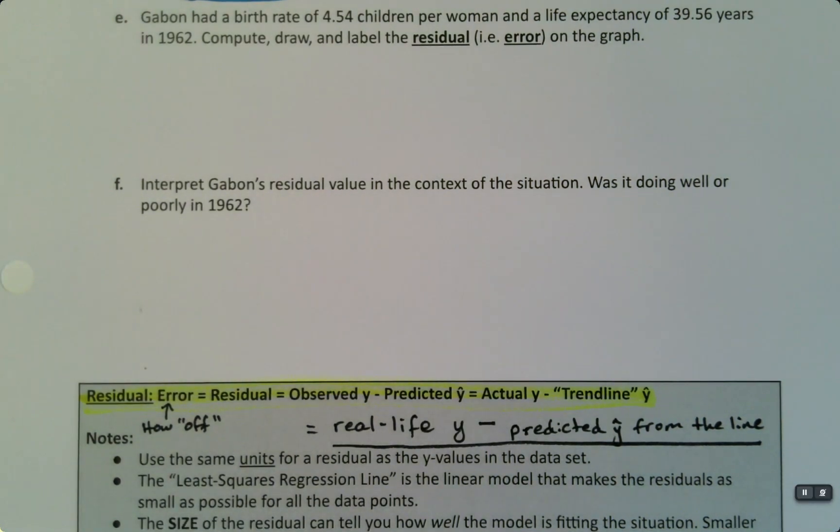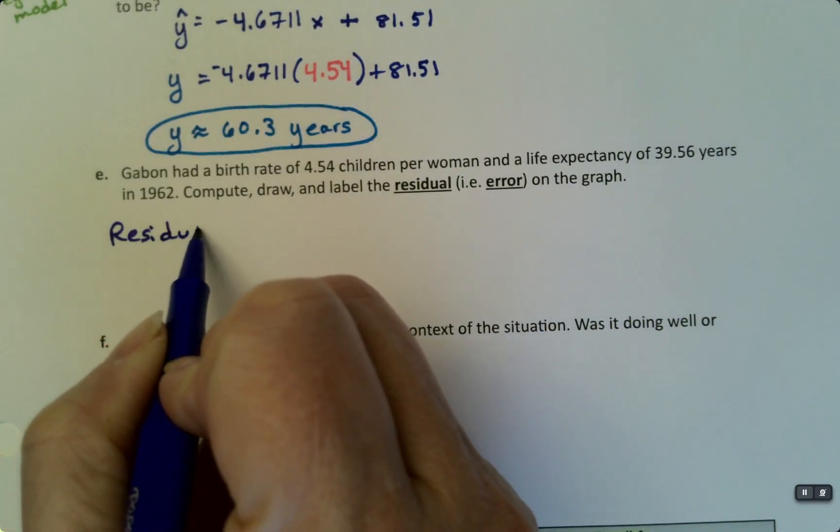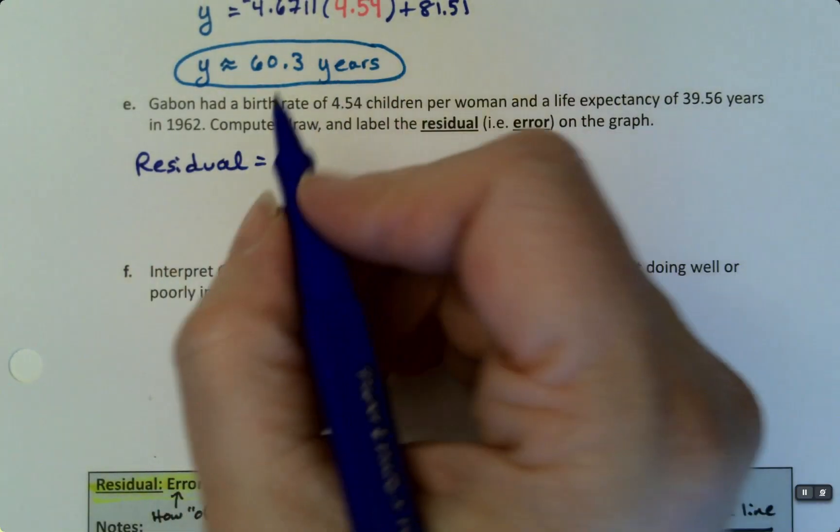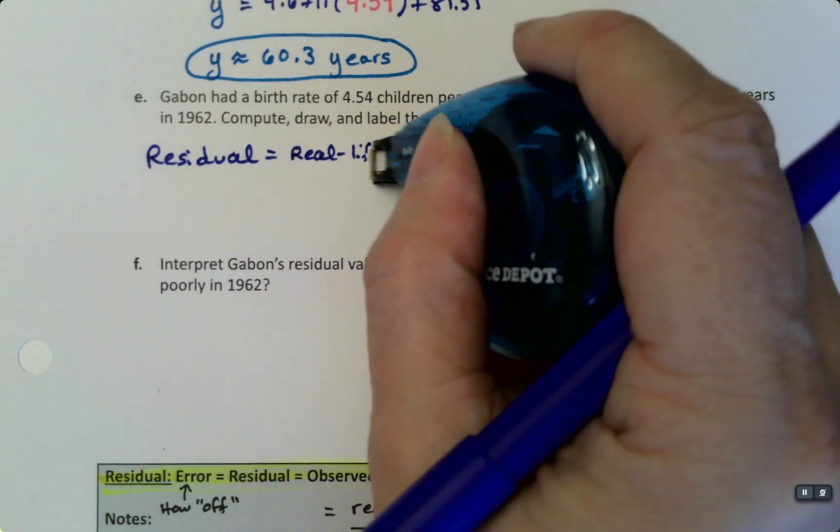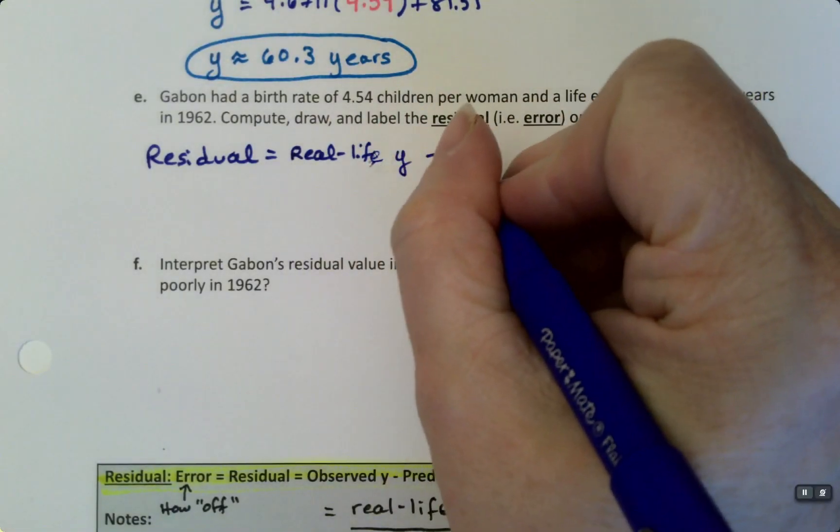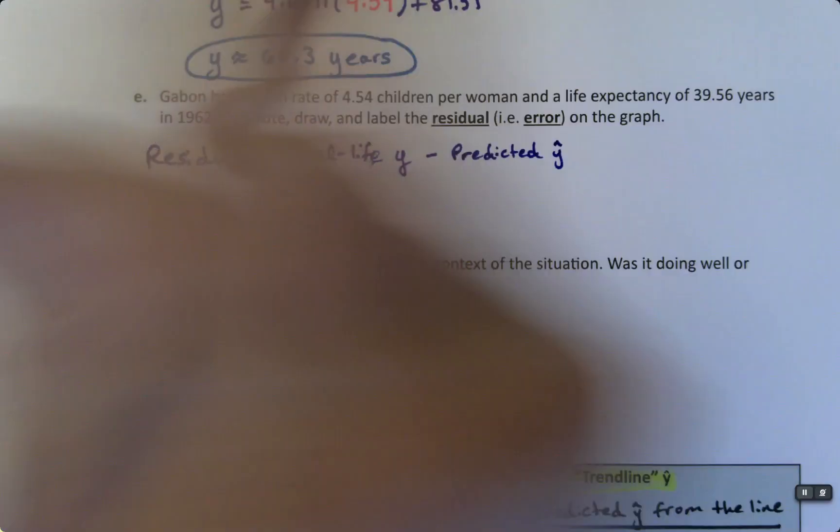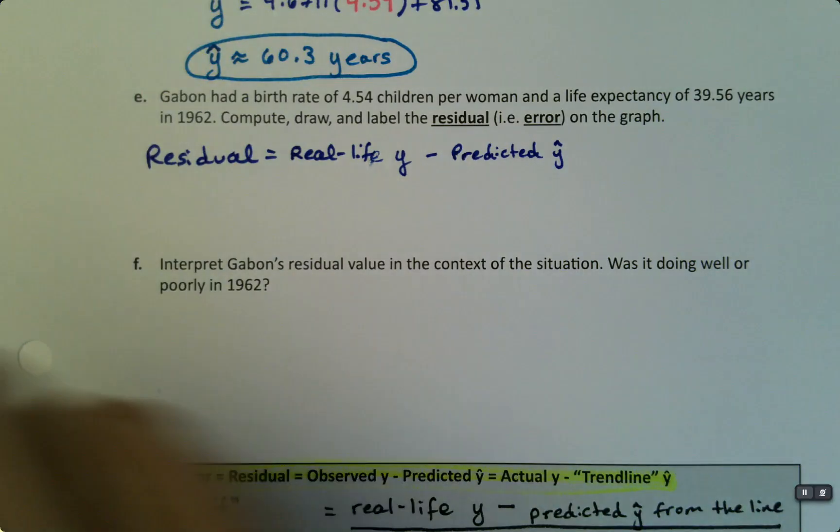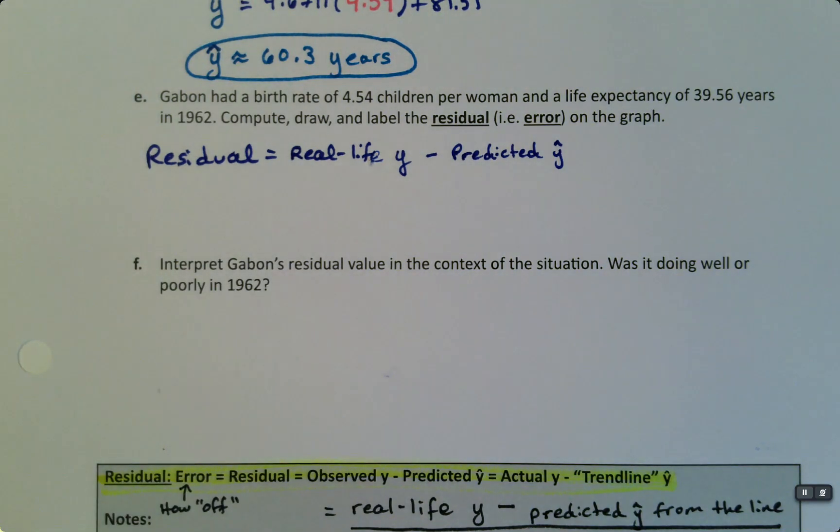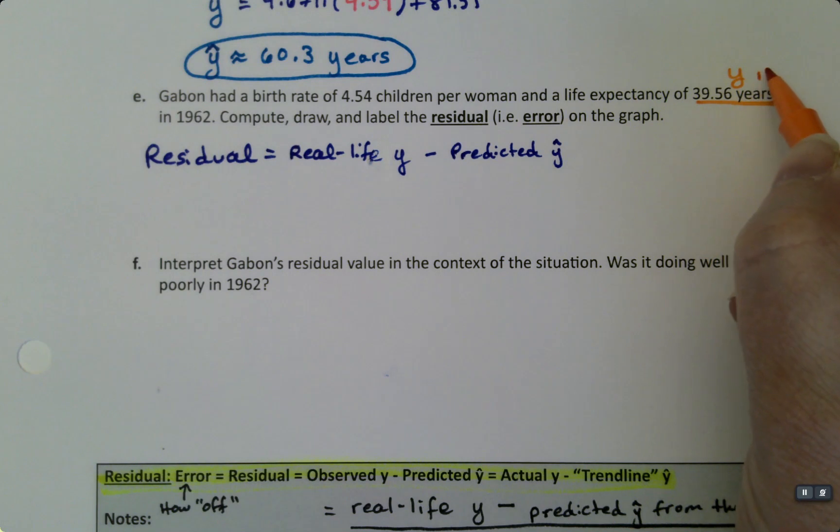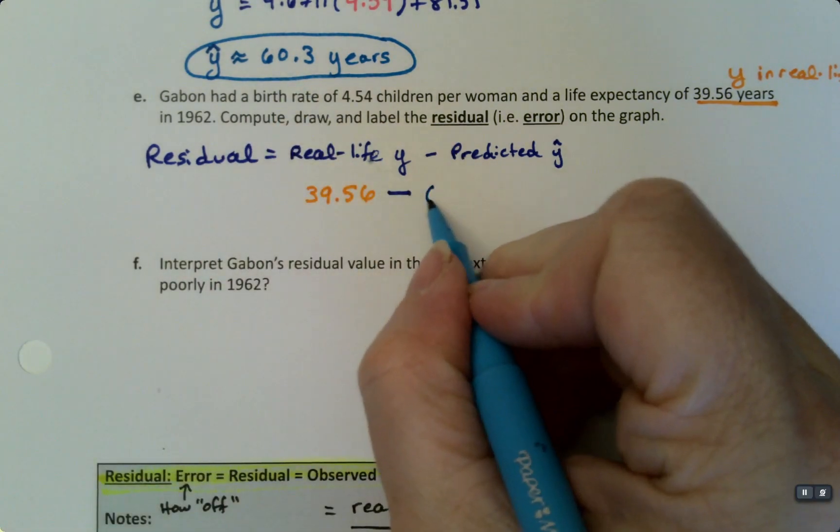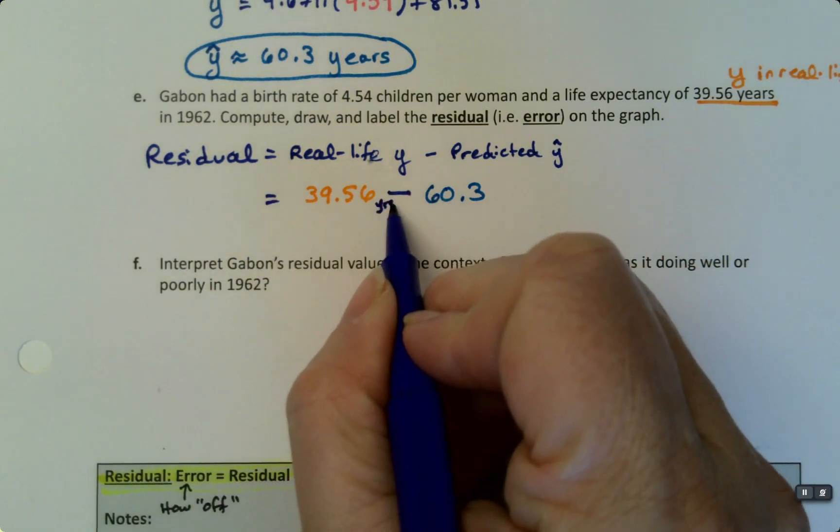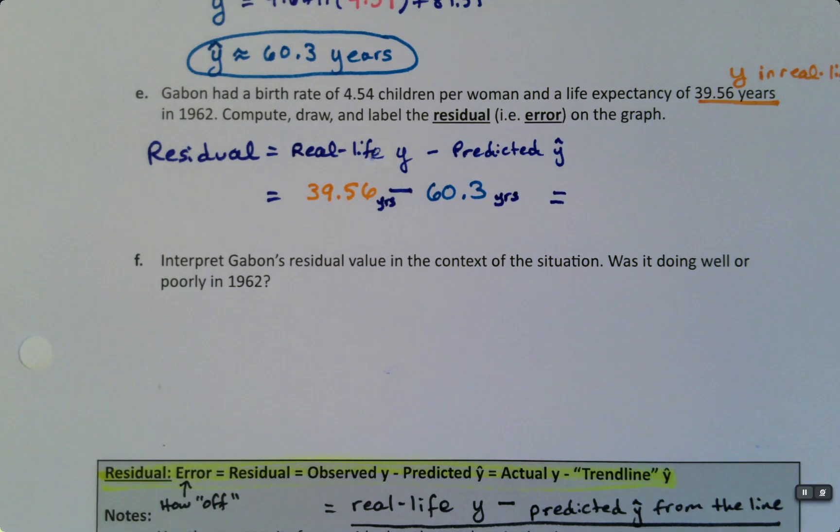So let's find what that value is. We're going to take the residual. I'm just writing it a whole bunch of different ways for our own benefit. So it's the real-life y value, real-life y minus the predicted y-hat, which is kind of what we're finding here. That should have a little hat on its head. So in real life, we have 39.56. This is y, this is real-life. In real life, it really was 39.56. I'm going to take 39.56 and I'm going to subtract my prediction, which is right up here, of 60.3. The units on both of these are years, right? So this is years, and this is years.